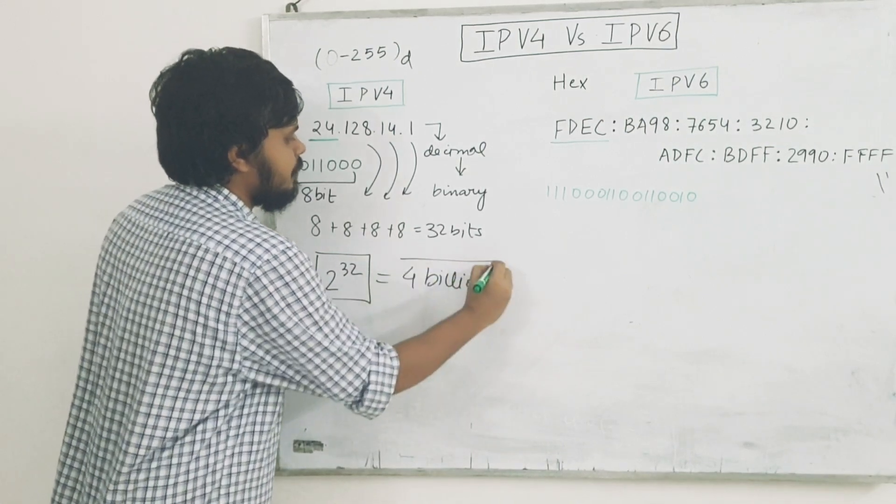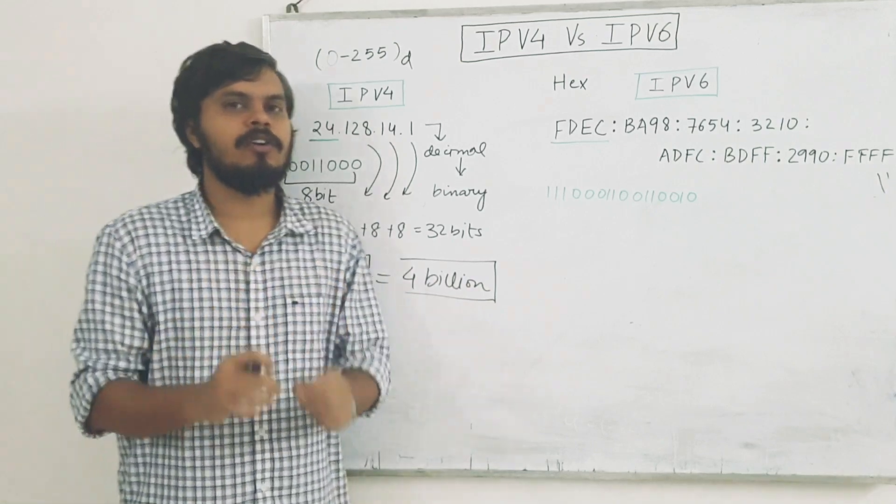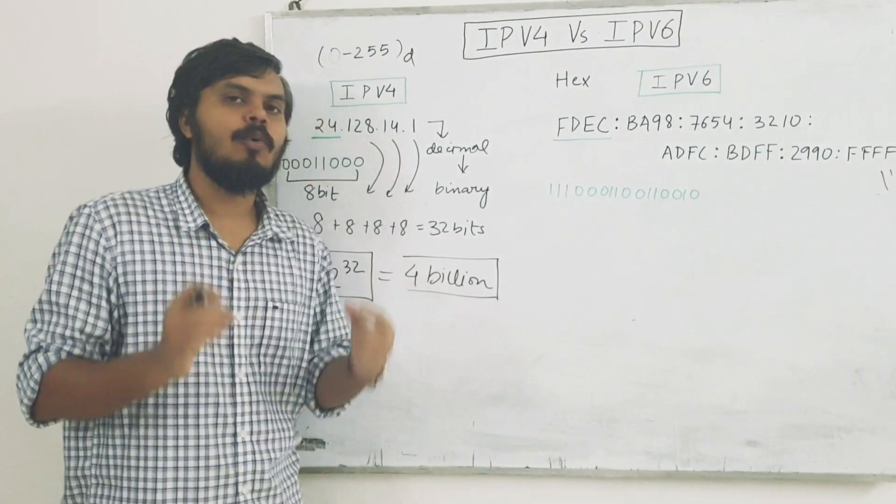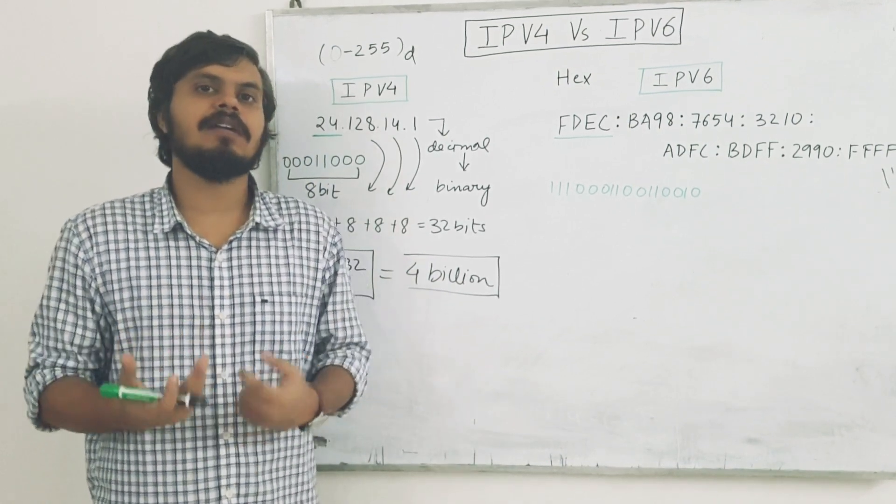And this is roughly 4 billion. So this means that at one particular point of time on the internet, there would be only 4 billion devices whose IP address is unique.